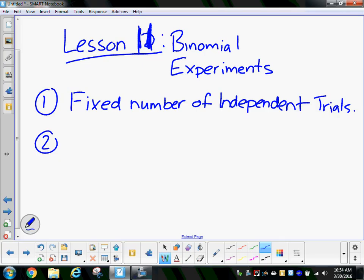There are only two possible outcomes. We'll call them success and failure. Success doesn't mean yippee, we did it. Success is just the thing that I'm looking for. So I flip the coin 10 times. I'm looking for the probability of a certain number of times of getting heads. So getting heads would be success. Getting tails would be failure.